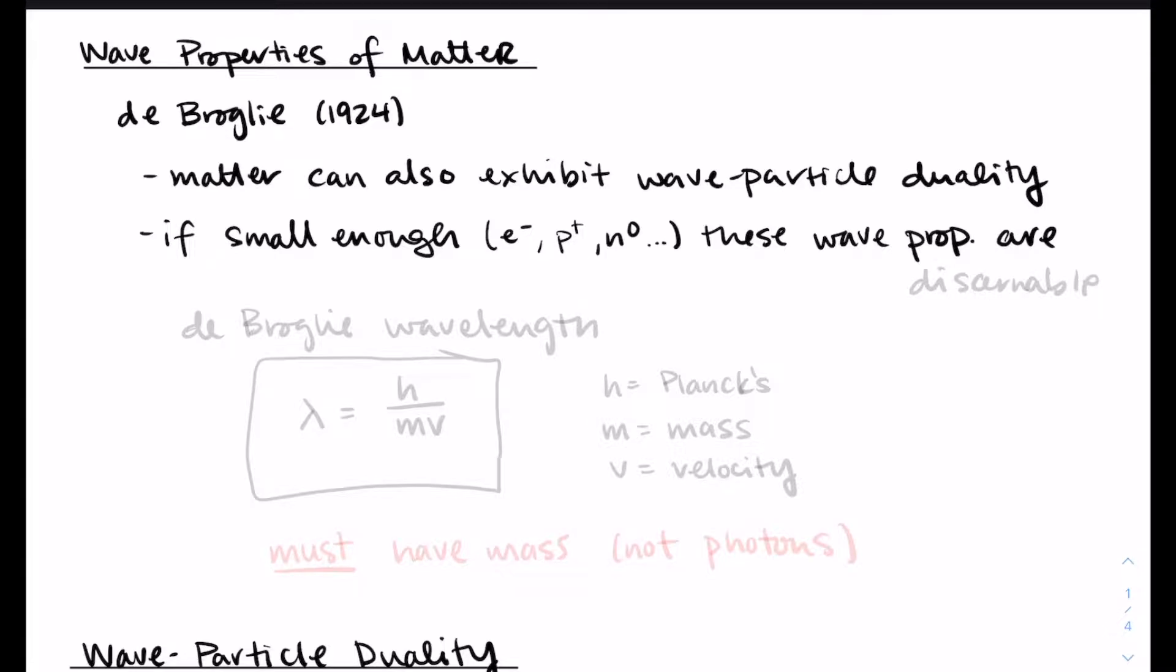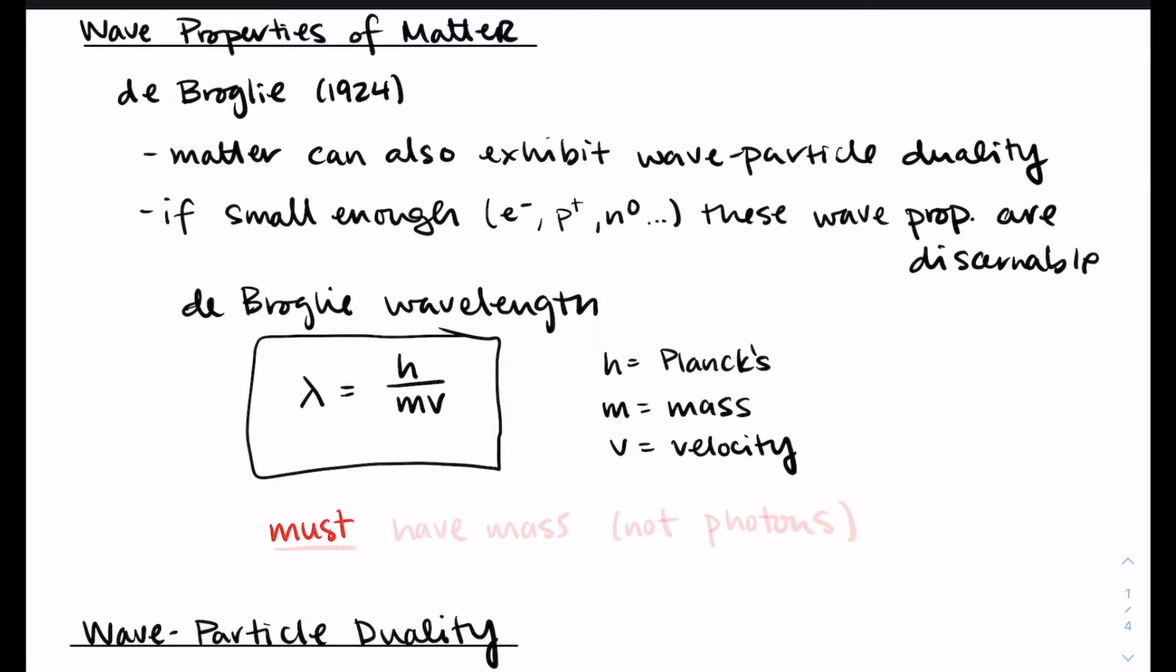So we have to use an equation that lets us calculate the wavelength that includes the mass of that object. That's what's going to scale it into or out of the discernible range. So this equation is that the wavelength is h over mv. H is still Planck's constant, m is the mass, v is the velocity. You must have mass in order to use this equation. You cannot use this equation for photons because photons don't have mass, and you can't use the photon equation for something with mass because the mass has to be accounted for.